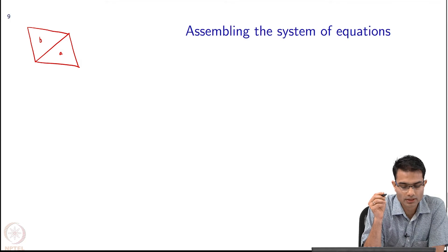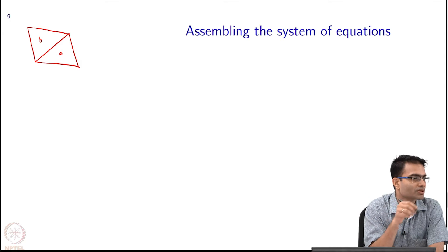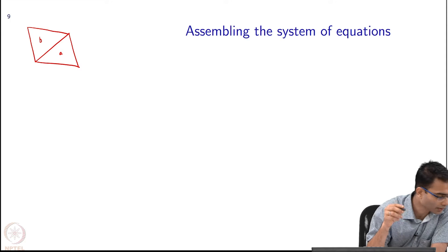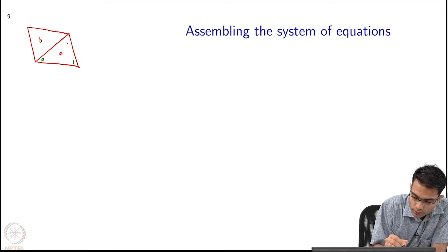Each of these triangles has 3 nodes and there will be some local numbers. The local numbers of the nodes will be, for example, 0, 1, 2 and 0, 1, 2. This node will be 0, 1, 2.